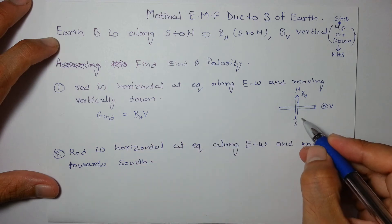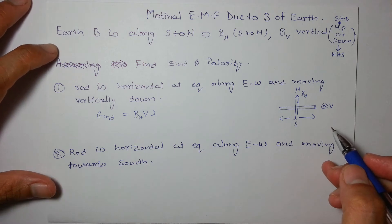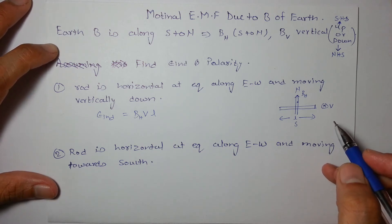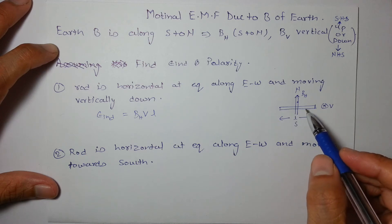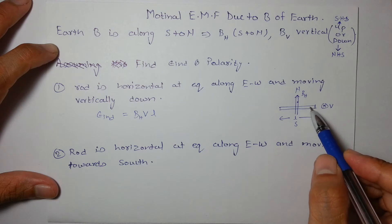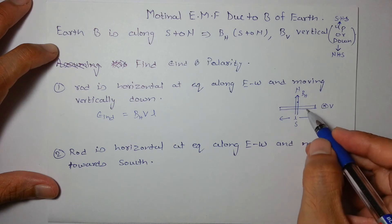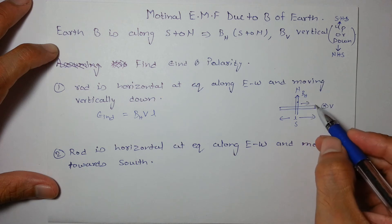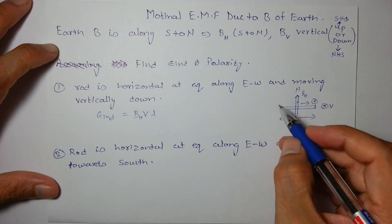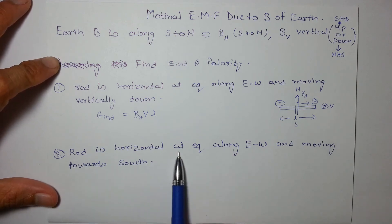So the EMF induced is BH × velocity × L (length of the conductor). We can also specify polarity using V cross B: V is downward and B is from south to north, so V cross B points towards the right (east). Therefore the east pole will be positive and the west pole will be negative.